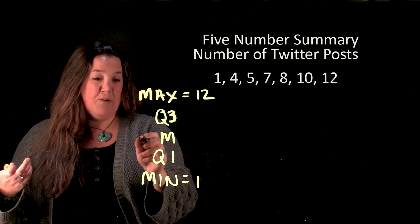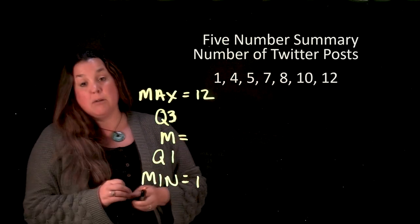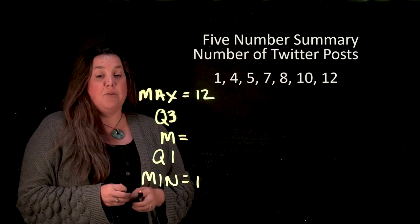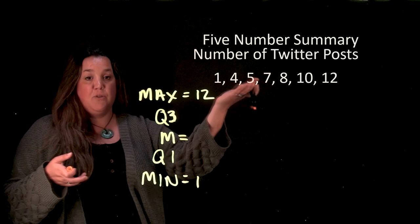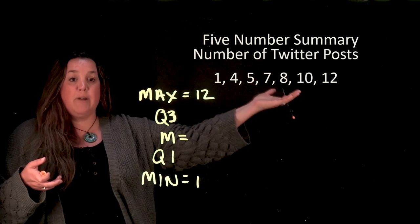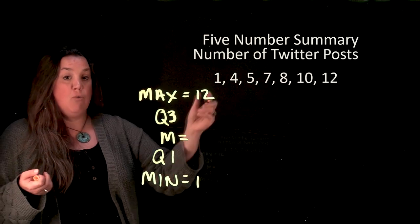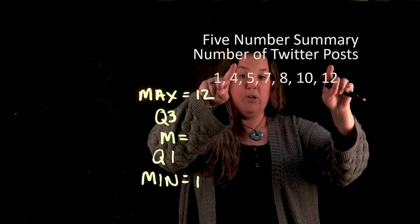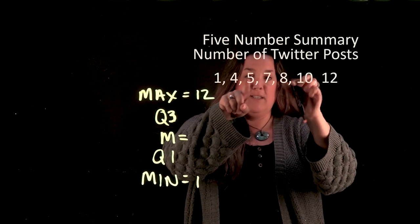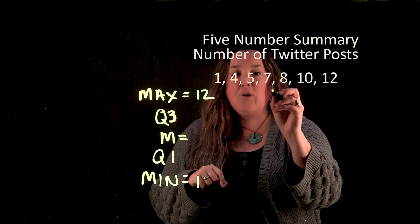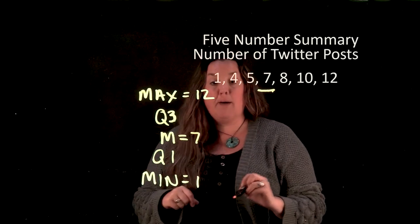Now the easiest one to find next would be the median. Now the median remember is the middle or the observation that cuts the data in half. And so when you have an odd number of observations like we have here we have seven observations. It's going to be one of those middle observations. So here we have if we're going to count in we have 12 and 1, 10 and 4, 5 and 8. And so that means that 7 is going to be our middle. So that is the middle observation.